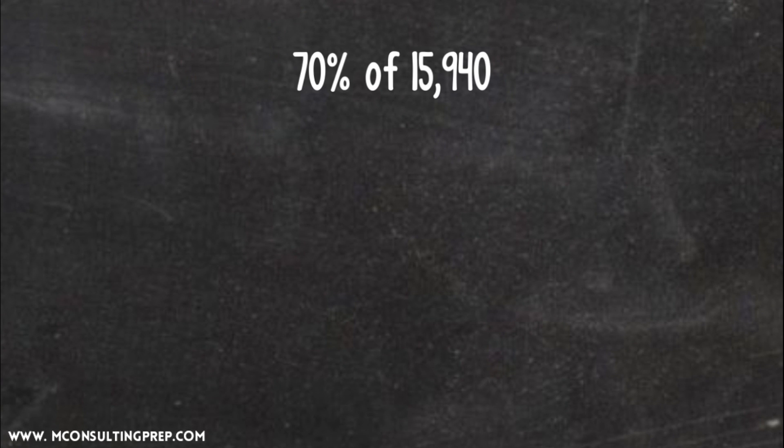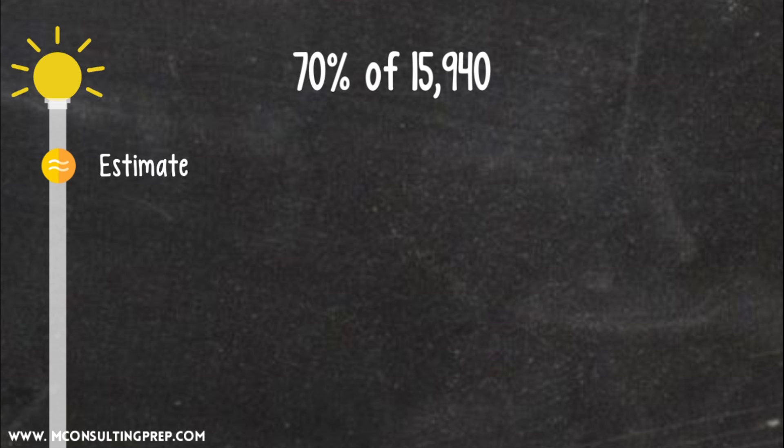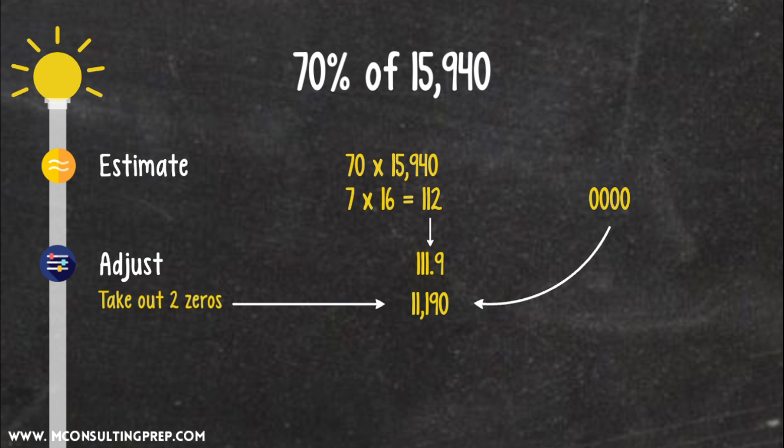Let's look at an example. 70% of 15,940. As we can see, 70% is not so close to any special figure, but it's very round already, so we would apply the classic approach of calculating. Step 1. Multiply 70 times 15,940. Take out four zeros and rounding, we have 7 times 16. That equals to 112. Adjust it down just a tiny little bit. We have 111.9. Return four zeros and take out two zeros originally from the percentage sign, and our answer is 11,190.